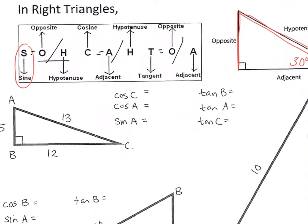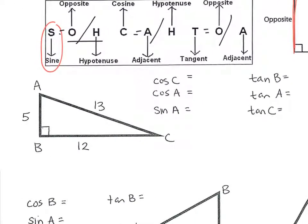Let's use this first triangle and use SOHCAHTOA to write out the ratios. Starting at cosine of C — cosine is adjacent divided by hypotenuse. The adjacent side is 12 and the hypotenuse is 13, so cosine of C is 12 thirteenths. For cosine of A, adjacent to A is 5 and the hypotenuse is still 13, so cosine of A is 5 thirteenths.